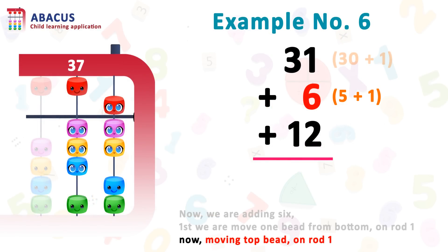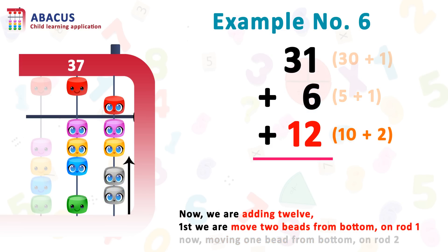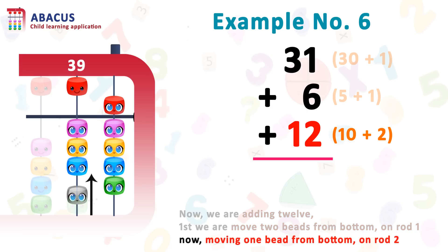Now we need to add 12. So for 12, we have to add 2 on rod 1 and then add 10 on rod 2. So first, we are moving 2 beads from bottom to top below the beam on rod 1. Now moving 1 bead from bottom to top below the beam on rod 2. And here we got the answer, 49. It's easy, right? Yes.